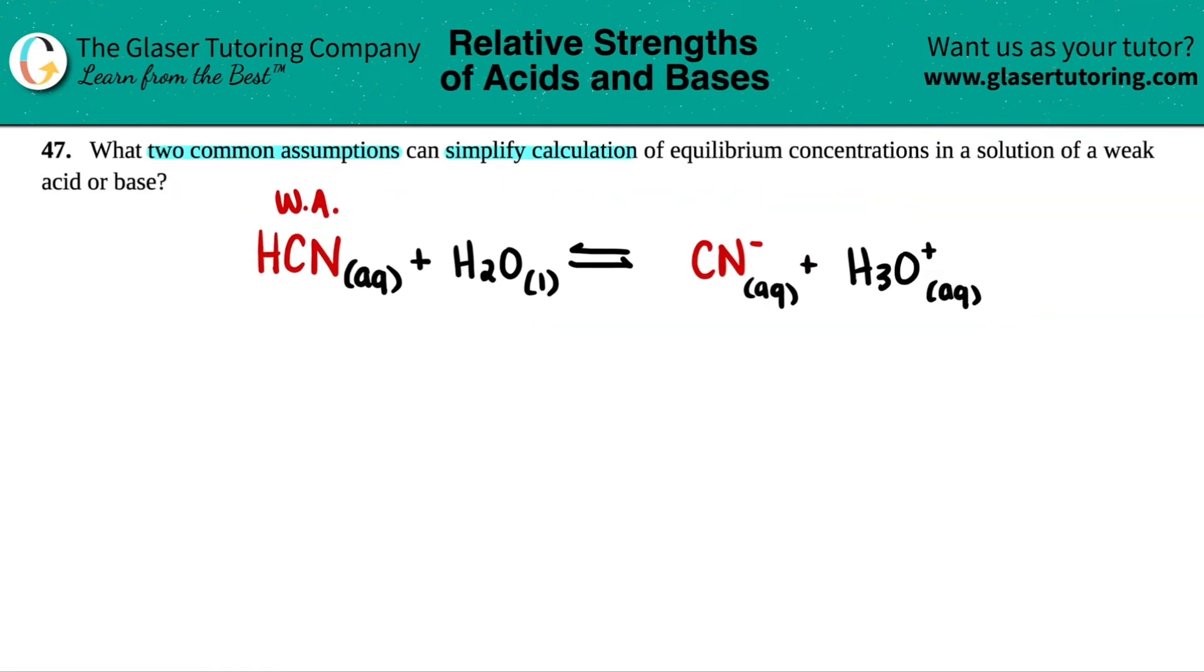Now, we're going to get into ice tables. We're going to get into them very quickly, but we did see ice tables in the last chapter. I, C, E. I stands for initial, C stands for change, and E stands for equilibrium.